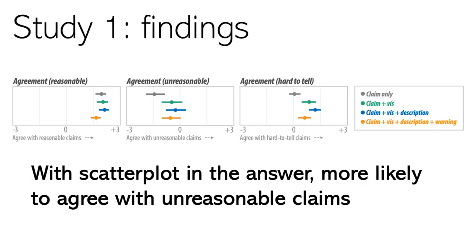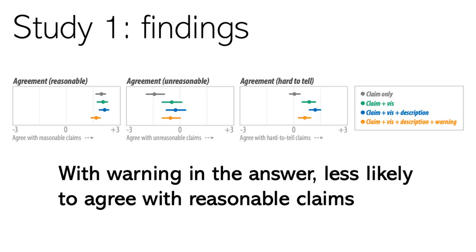So what did we find from Study 1? We found that when the scatter plot was presented to show evidence about correlation, there was a higher likelihood that people would agree with unreasonable claims. And with the warning message, people were less likely to agree with the reasonable claims, but we did not see this effect for unreasonable causal claims. It meant that the warning was somewhat effective in mitigating the misinterpretation of correlation as causation.